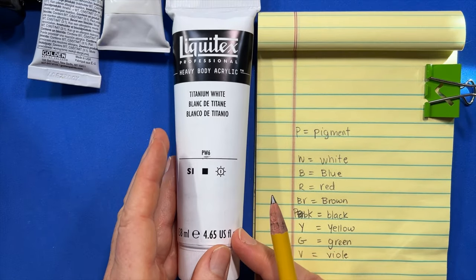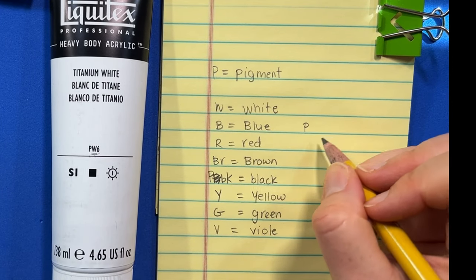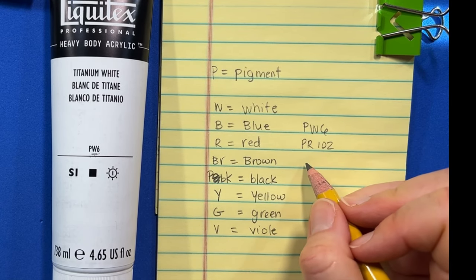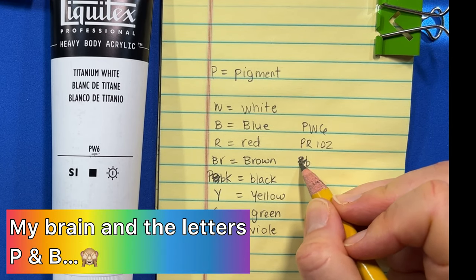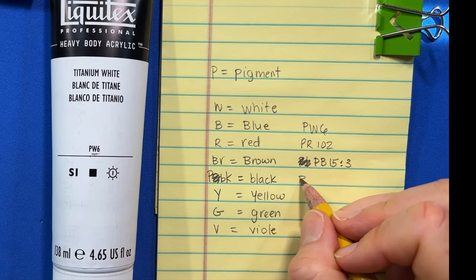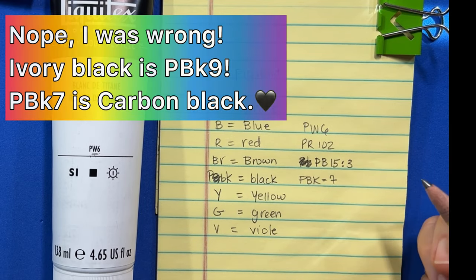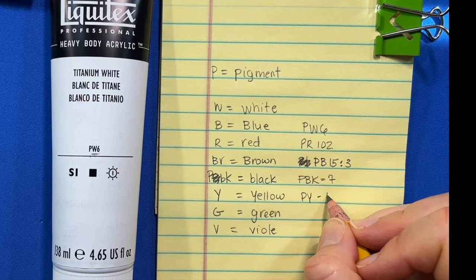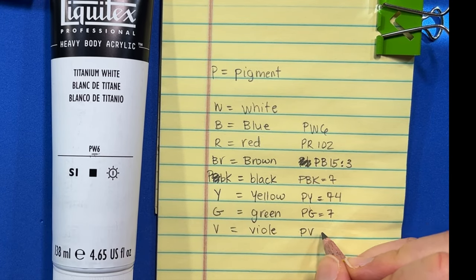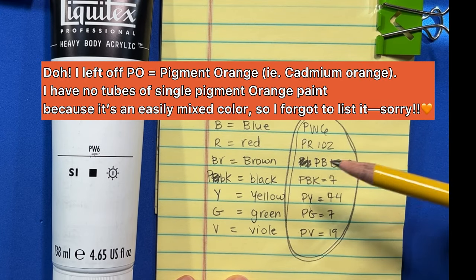So you'll see codes like PW6, which means titanium white. Or something like PR102 for a pigment red, PB15:3 which is thalo blue, PBK7 which I think is ivory black, PY74 for a pigment yellow, PG7 which is thalo green, and PV19 which I think is quinacridone violet. That's your pigment information.